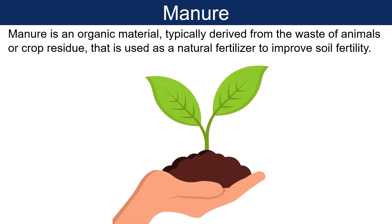What is manure? Manure is an organic material typically derived from waste of animals or crop residue that is used as a natural fertilizer to improve soil fertility. It is rich in organic matter and contains essential nutrients like nitrogen, phosphorus and potassium along with other micronutrients.